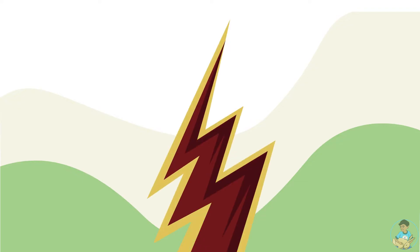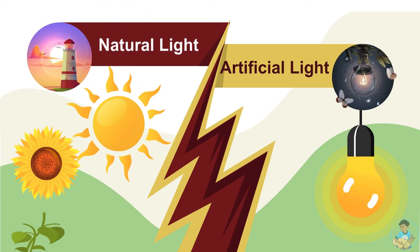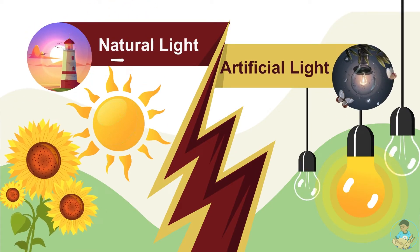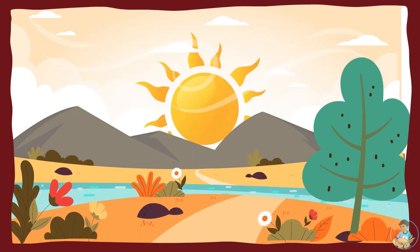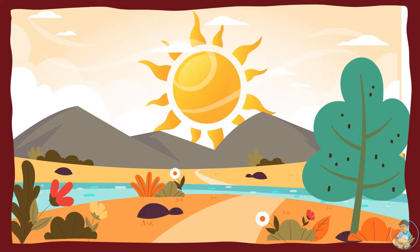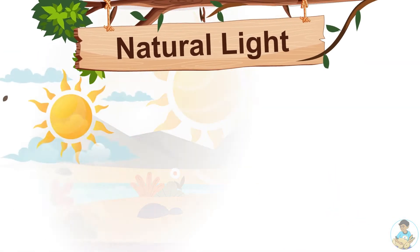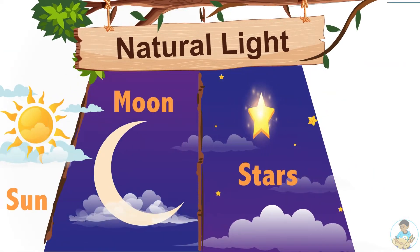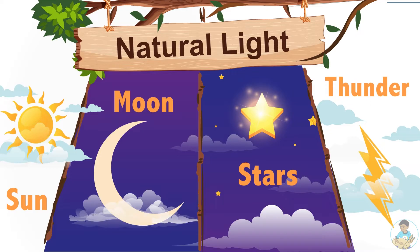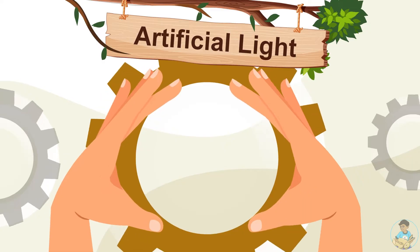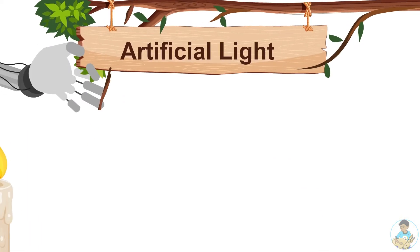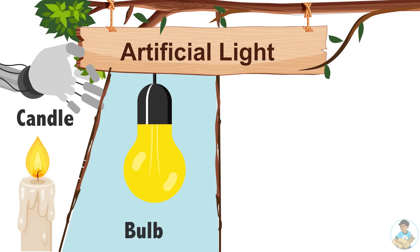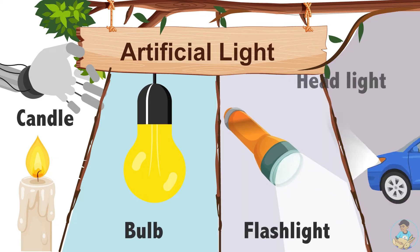Depending on the source, light can be categorized into two basic types: natural light and artificial light. We get natural light from all the natural sources in nature like the sun, moon, stars, or even lightning in the sky during thunderstorms. Artificial light, on the other hand, is produced by man-made sources like candles, light bulbs, flashlights, headlights, etc.